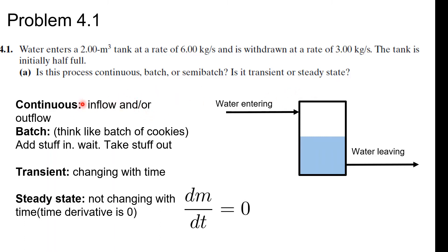So, continuous — the water is entering and also leaving; it's just continuous. Whereas batch — think of like a batch of cookies: you put the ingredients in the oven, you wait a while and let it do its thing. Maybe it's reacting, maybe it's mixing, and you just take the stuff out. That's batch for the processes. A transient process is one that is changing with respect to time — in other words, it's a differential equation that you can write to describe some quantity changing with respect to time.